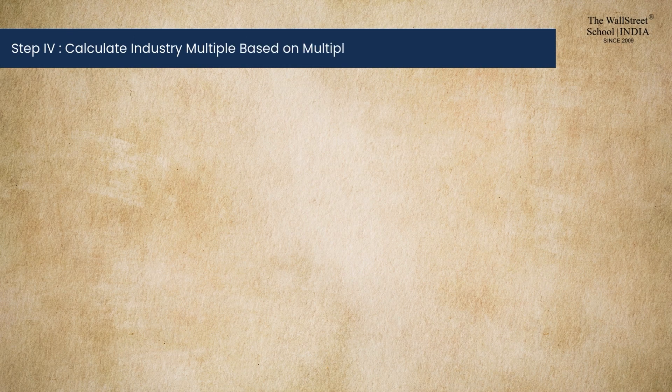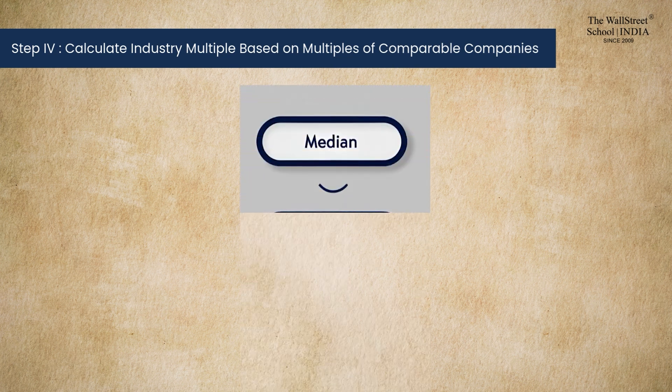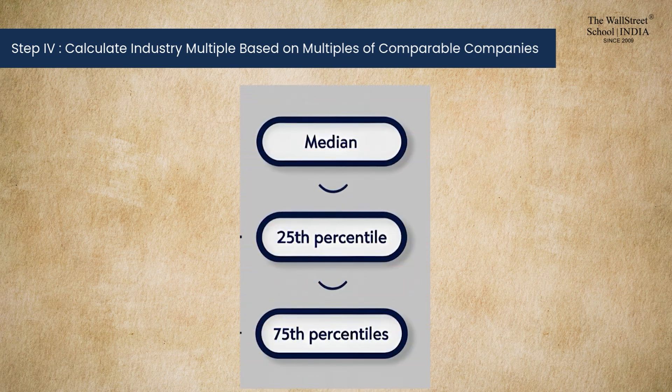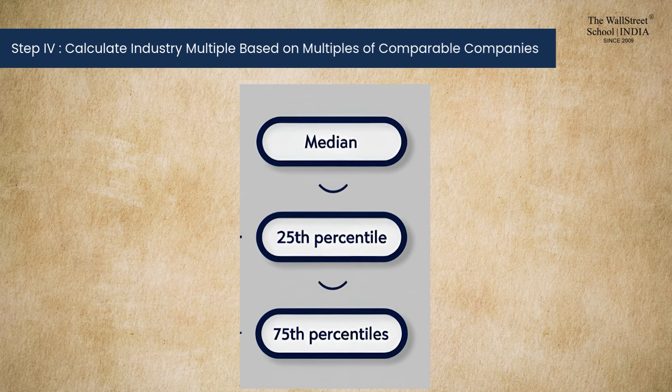Step four: find industry benchmark multiples based on the peer multiples calculated in step three. In this step, we calculate industry benchmark multiples such as the median, 25th percentile, or 75th percentile — typically three benchmark multiples for the industry.